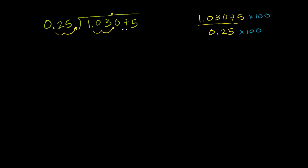Now let me just rewrite this. Sometimes if you're doing this in a workbook or something, you don't have to rewrite it as long as you remember where the decimal is. But I'm going to rewrite it just so it's a little bit neater. So when we multiplied both the divisor and the dividend by 100, this problem becomes 25 divided into 103.075.